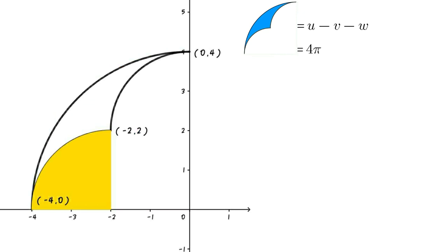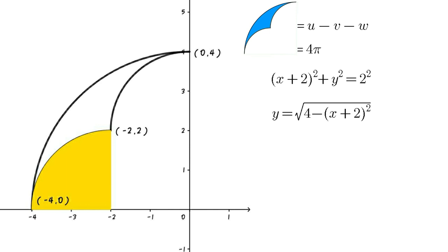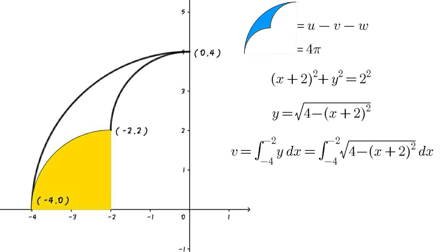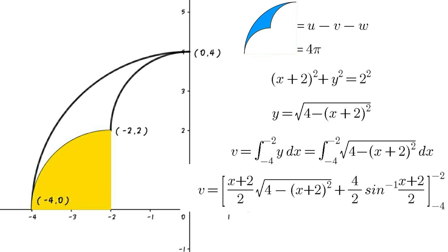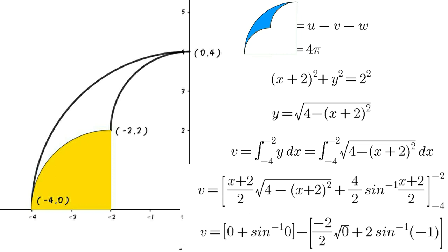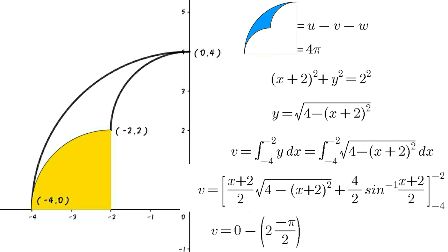The small curve is a quarter circle centered at (−2, 0) passing through (−4, 0) and (−2, 2). Its equation is (x + 2)² + y² = 4, so y = √(4 − (x+2)²). Then V = ∫(−4 to −2) √(4 − (x+2)²) dx. Applying limits gives V = 0 − 2(−π/2) = π.